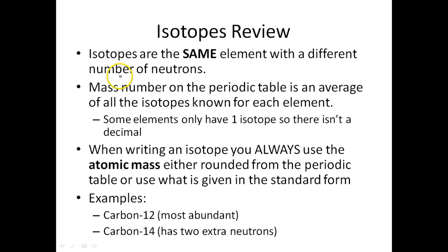Isotope review. Isotopes are the same element with a different number of neutrons. We talked about that in the beginning of the video. But this is really important. The same element. It can't be a different element. And it always has to have a different number of neutrons. Remember, it's just a different number of neutrons. If we change the number of protons, it's going to make a whole new element. If we change the number of electrons, it's going to make an ion. So you have to remember that it's just the neutrons.